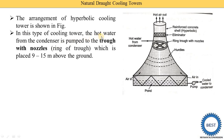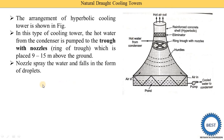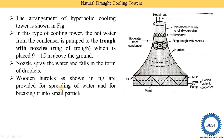In this type of cooling tower, hot water from the condenser is pumped to the ring of throw nozzles, which is placed 9 to 15 meters above the ground. Hot water from the condenser is supplied here and from the various nozzles the water falls downward. As the water falls, air comes into contact with it and absorbs heat energy, reducing the water temperature. Cool water is collected at the base. Nozzles spread the water in the form of droplets, not jets. Wooden hurdles are provided for spreading the water and breaking it into small particles.